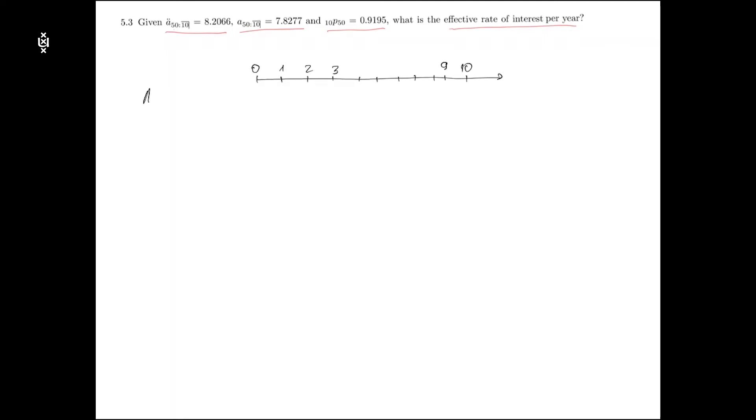Under annuity due the payments are made in advance conditional that a life is alive at the time of payments. So there are 10 payments and the first one is made at time zero and the last one is made at time nine.